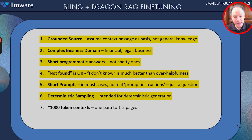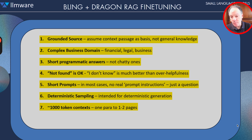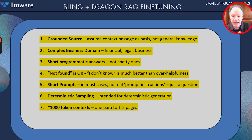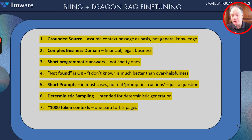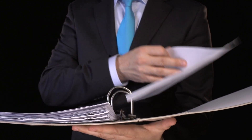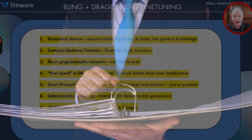Recognizing some of the limitations of smaller models, we orient our fine-tuning at around a thousand token contexts, which is anywhere from a paragraph or two to a couple of pages — but not really more than that. We don't believe that trying to exploit the maximal context window is usually the best strategy to get accuracy. We look at context in this size range with the expectation that you're going to have to be able to get to the right page or two of information to then feed it into the model to get consistent, accurate results.